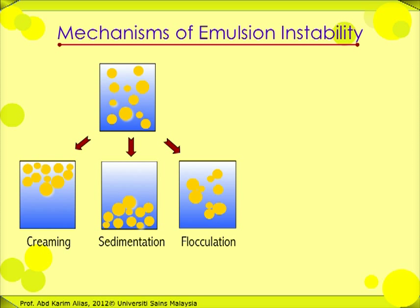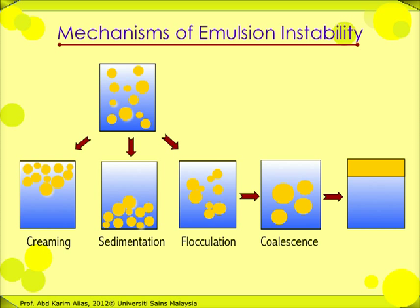In addition, the rate of flocculation can be affected by the pH and ionic strength of the aqueous environment. Flocculation could lead to coalescence. Coalescence involves breaking the interfacial film and is irreversible.